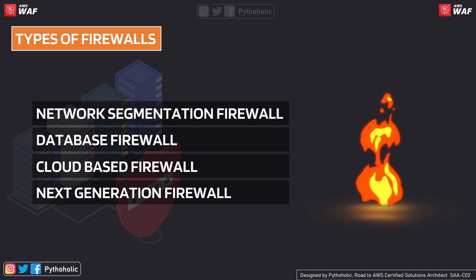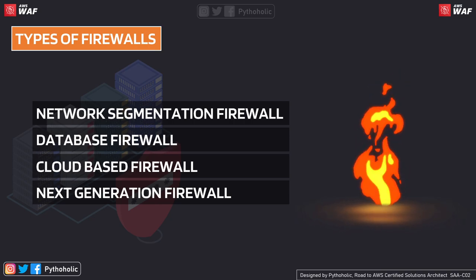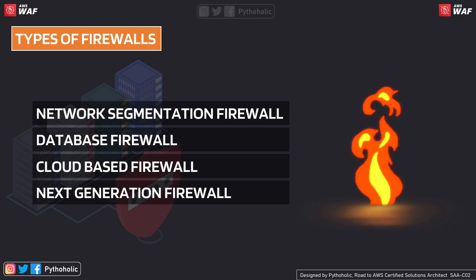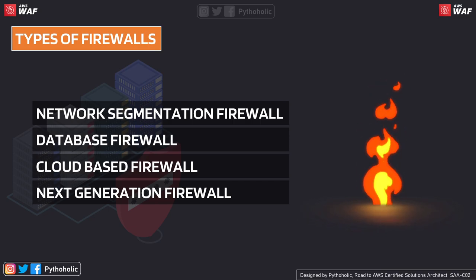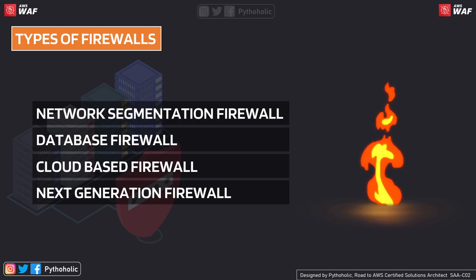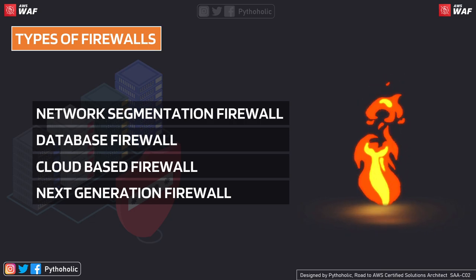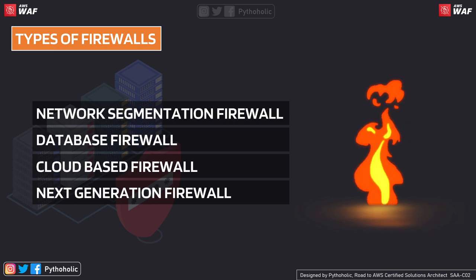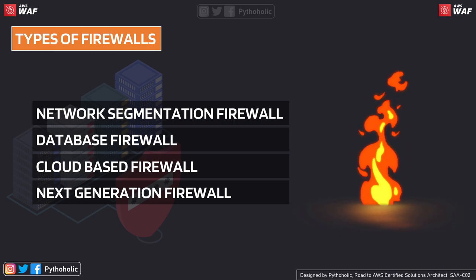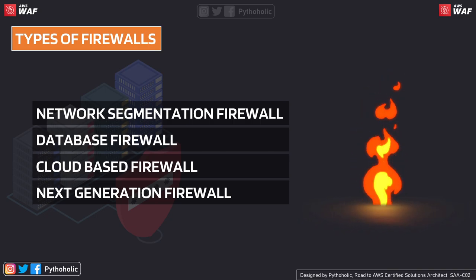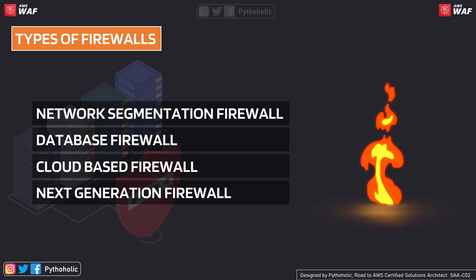The network segmentation firewall is used when you have a bigger network that needs to be divided into smaller segments or down to individual devices. You can use a hardware firewall that helps you segment the network without touching the actual network itself. These are called network segmentation firewalls — they break down a bigger network into smaller networks by configuring rules on the firewall that interpret the network as having been segmented into separate parts.